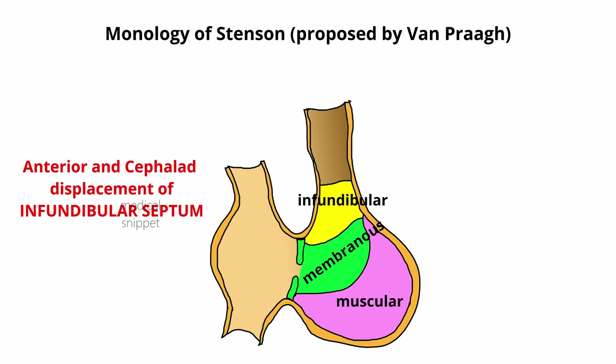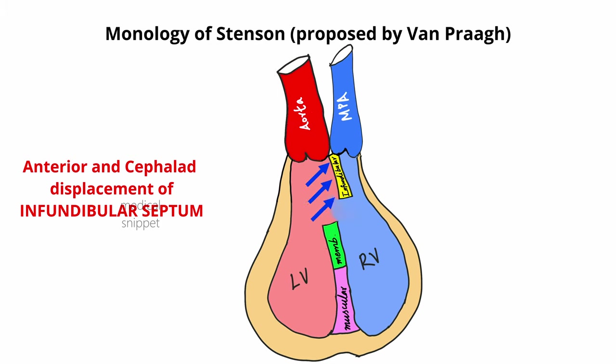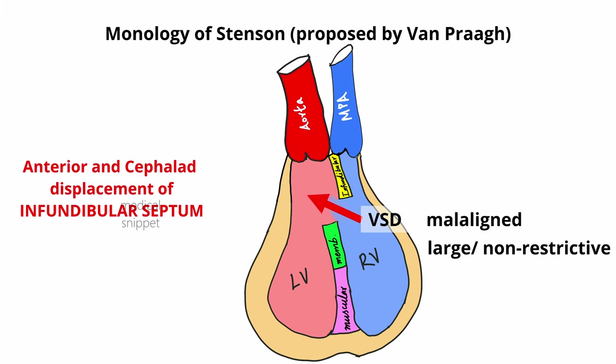In the monology concept, the infundibular septum moves in the anterior and cephalad direction so that it cannot join the membranous septum to close the interventricular foramen. Thus, there is a persistent interventricular foramen which we call a ventricular septal defect. As the infundibular and membranous septum are in different planes, the VSD is called mal-aligned, and the VSD is also large and non-restrictive.